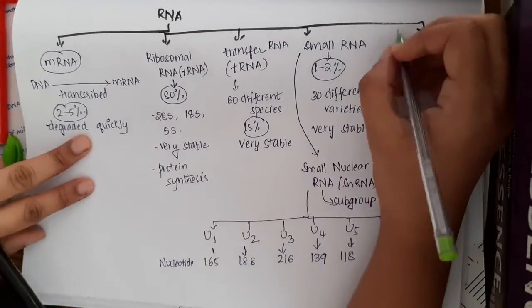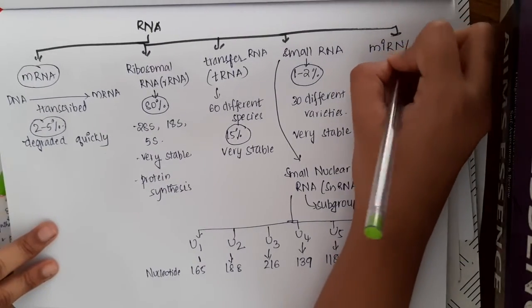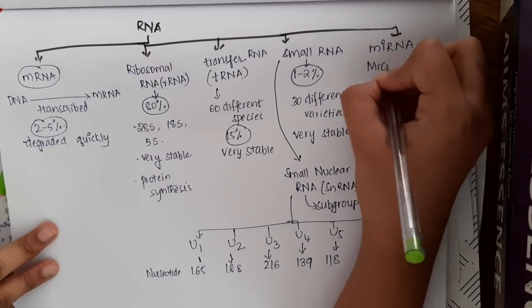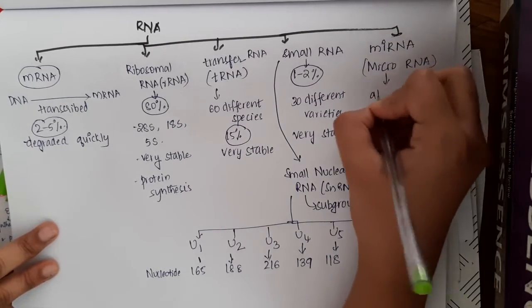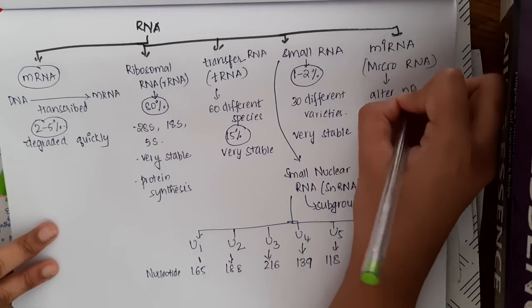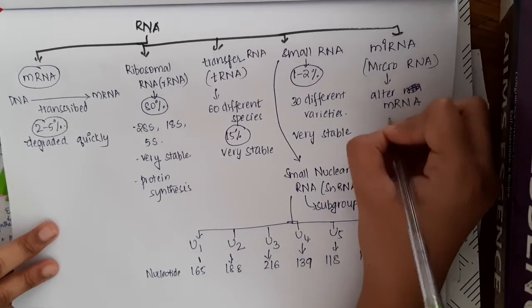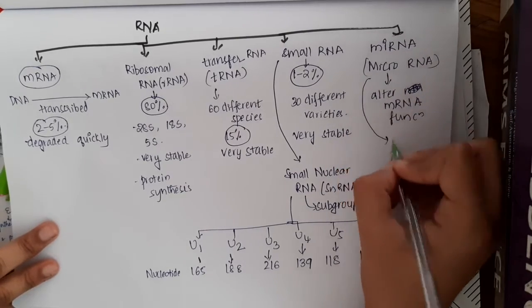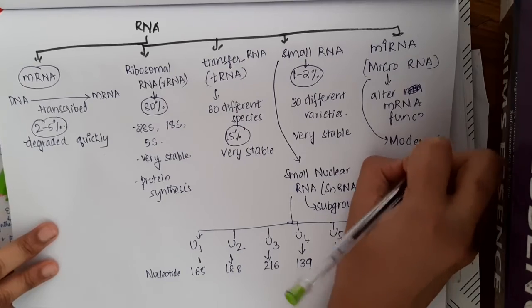And the fifth type of RNA is miRNA or microRNA. These microRNAs will actually alter the mRNA function, and these are moderately stable when compared to others.